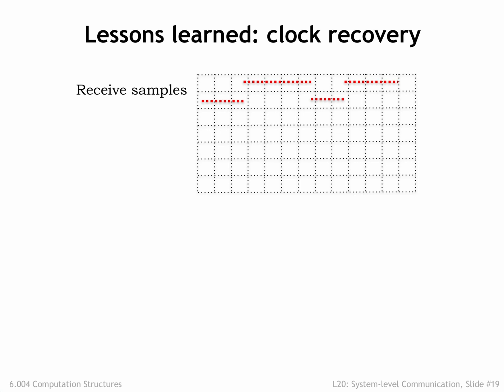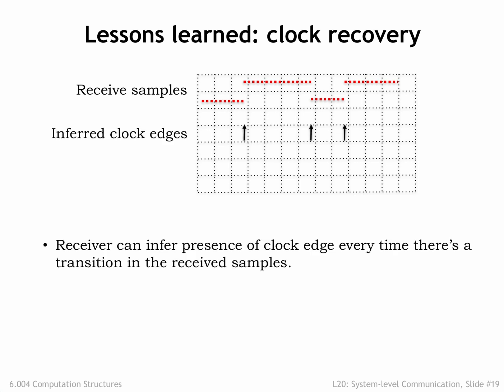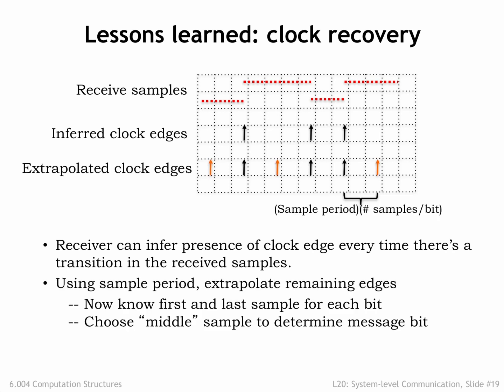If the transmitter changes the bit it's sending at the rising edge of the transmitter's clock, then the receiver can use the transitions in the received waveform to infer the timing for some of the clock edges. Then the receiver can use its knowledge of the transmitter's nominal clock period to infer the location of the remaining clock edges, using a phase-locked loop to generate a local facsimile of the transmitter's clock.